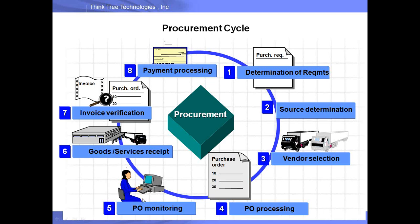If needed, purchase order monitoring is conducted. Next is goods receipt processing — the vendor supplies the product and we post the goods receipt. Step seven is invoice verification, where we verify the invoice. Step eight is payment processing, where we pay the vendor.